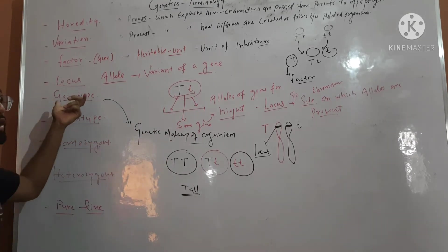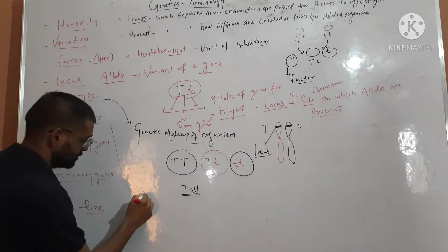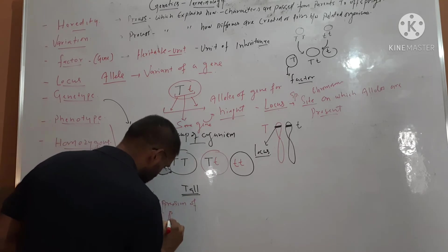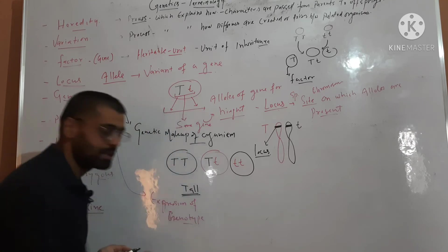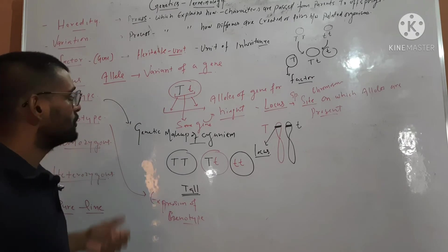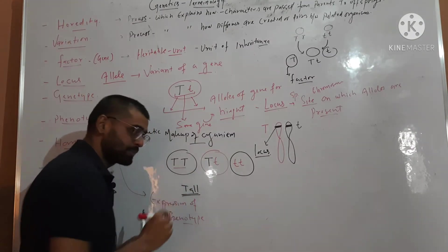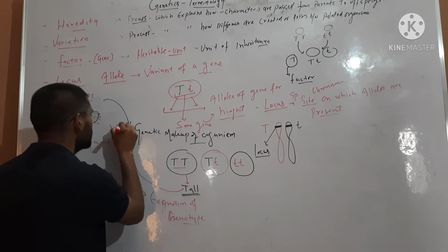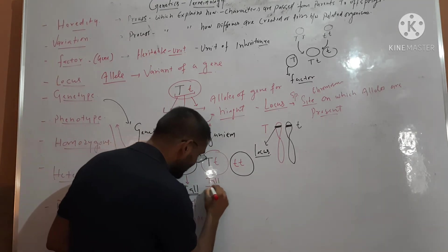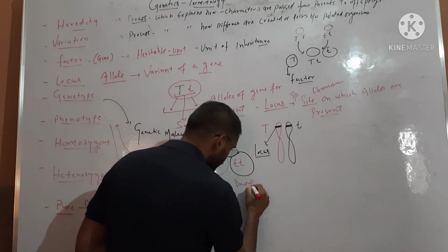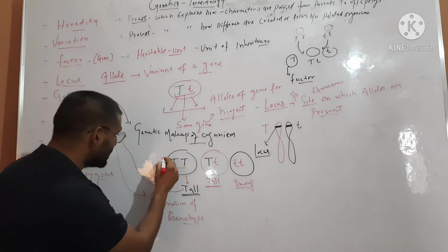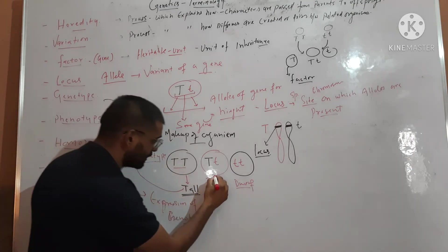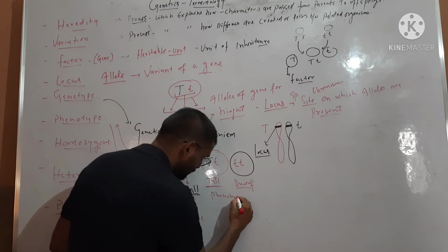Phenotype is the expression of this genotype — or you can say the manifestation of genotype is called phenotype. So suppose this plant has genotype capital T capital T, this plant will be tall. A plant with capital T small t will also be tall. A plant with small t small t will be dwarf. So the genetic makeup here is genotype, and the expression of this genetic makeup is called phenotype.